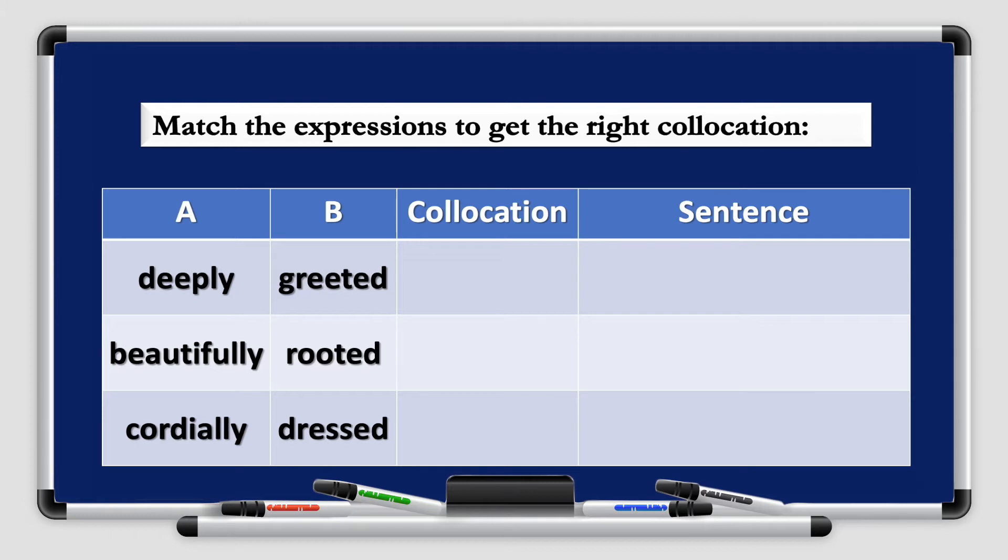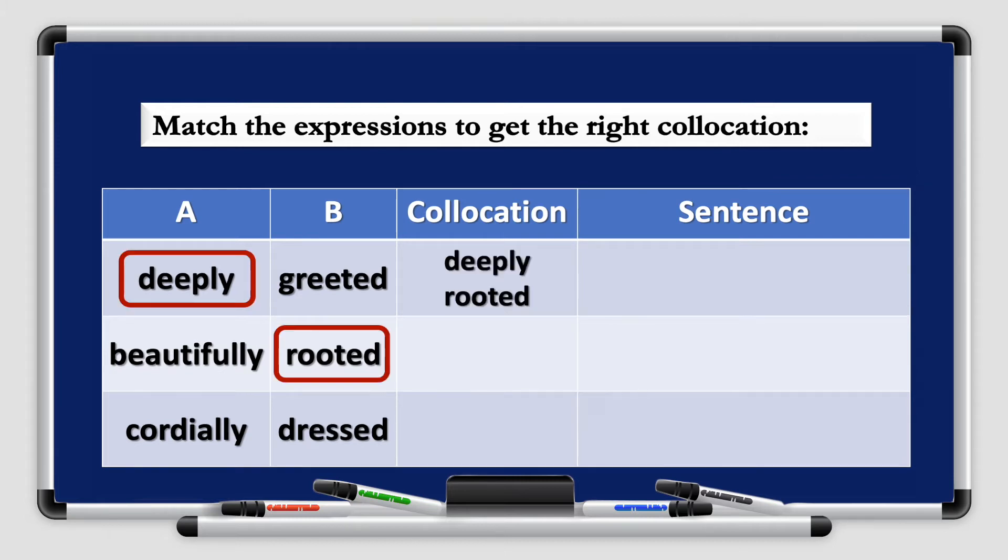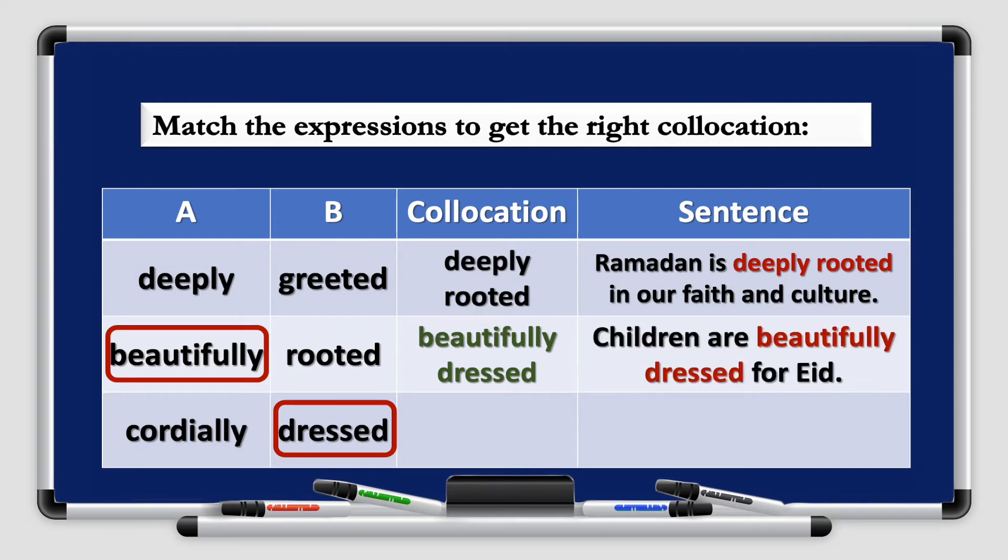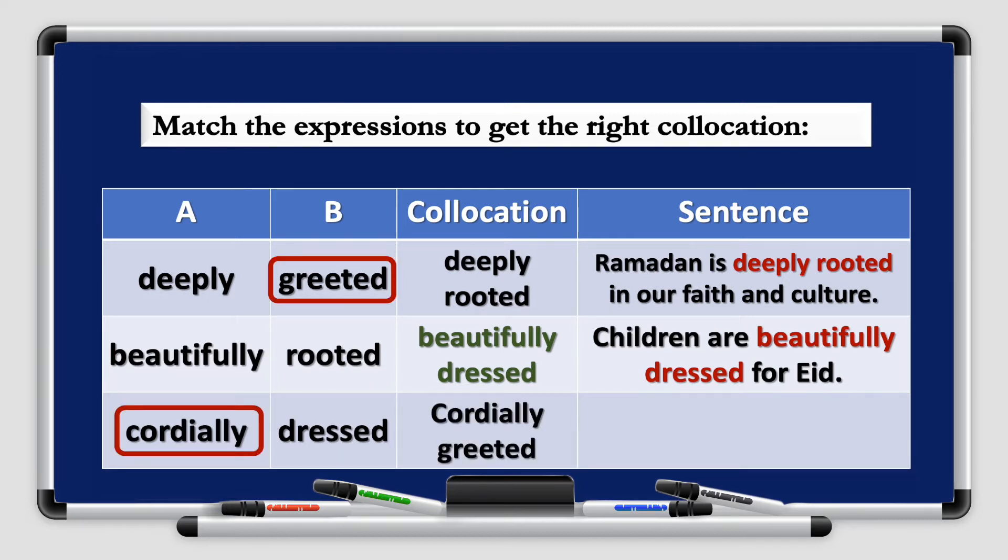Let's look at the first one. Deeply greeted or deeply rooted or deeply dressed. So it is deeply rooted. Excellent. An example sentence would be, Ramadan is deeply rooted in our faith and culture. What about beautifully? Beautifully greeted or beautifully dressed? If you look nice, your outer look, you are beautifully dressed. Good job. Children are beautifully dressed for Eid. And finally, we have cordially greeted in a good manner. Teachers are cordially greeted for their efforts.